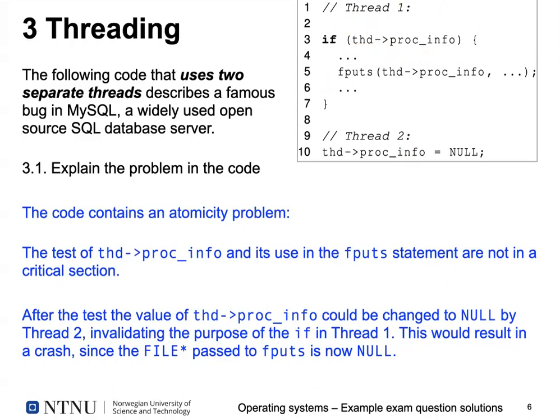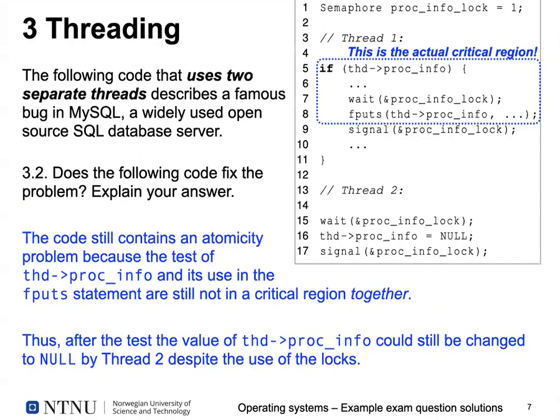Even if we checked the value, since threads share memory, it can be set to zero in between. We have what we call an atomicity problem: the test of proc_info and its use in the fputs statement in line 5 form a critical section, but they're not enclosed in anything marking a critical section. One proposed fix was to put wait and signal around the fputs statement, but that doesn't fix the problem — it just protects the fputs, whereas what really needs to be protected is the whole critical region, including the check for validity of proc_info and its use in fputs.